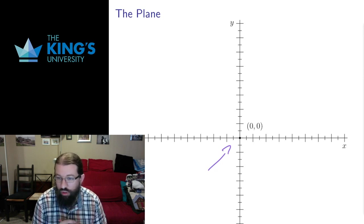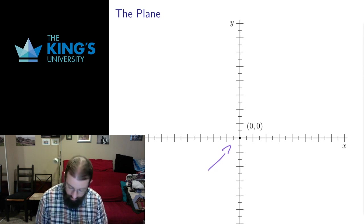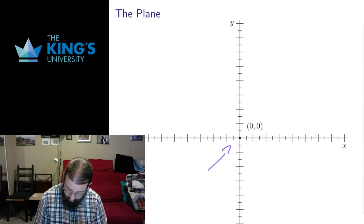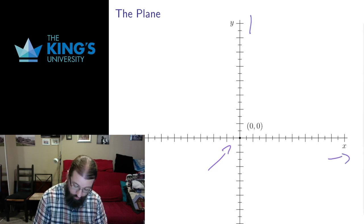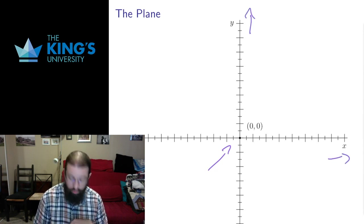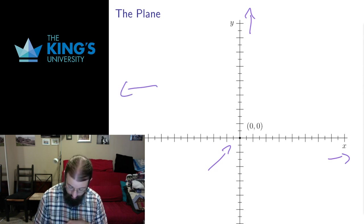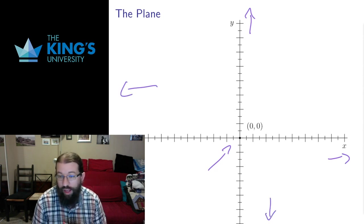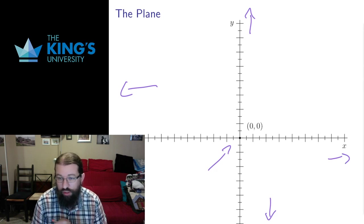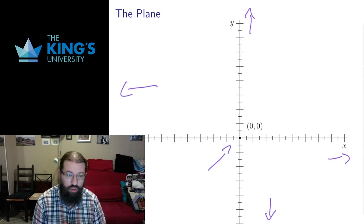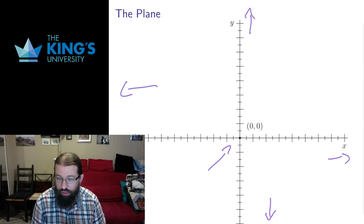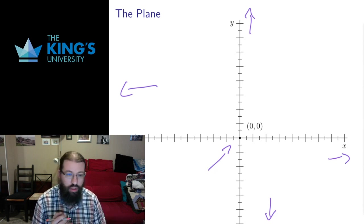By convention, moving to the right and moving up is positive. So this direction is positive, this direction is positive. Moving in the other direction, this direction is negative, this direction is negative. And that's just entirely convention. There's no reason that it had to be that way. You have to set a convention for axes and decide which direction is positive and negative. And these are the conventions that we have set, the conventions that we work with.